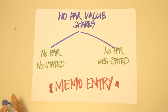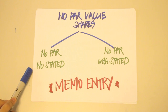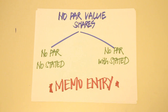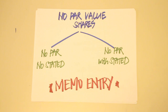When accounting for no-par value shares, you first need to remember that there are two types: no-par no-stated value, and no-par with stated value. No-par no-stated value shares have no nominal value on the face of the stock certificates and no stated value in the articles of incorporation. No-par with stated value shares have no nominal value on the face of the stock certificate but do have a stated value fixed by the Articles of Incorporation, the Board of Directors, or by holders of a majority of the shares entitled to vote.